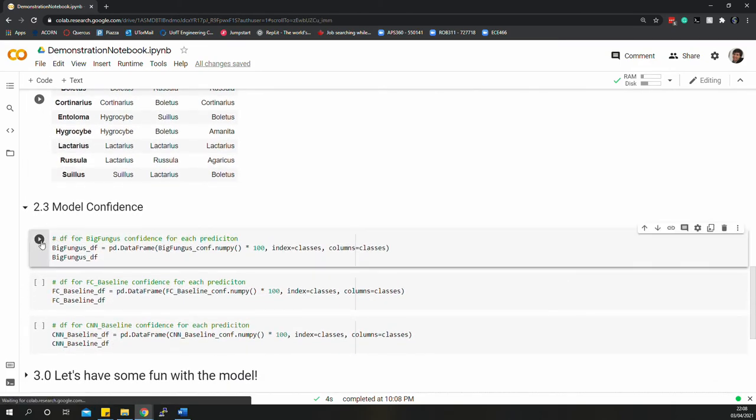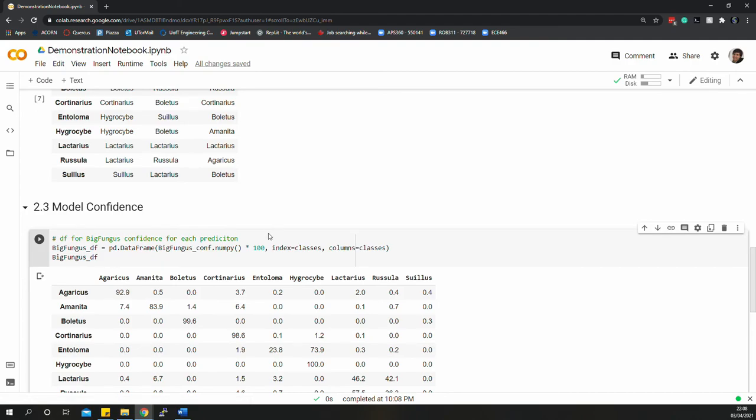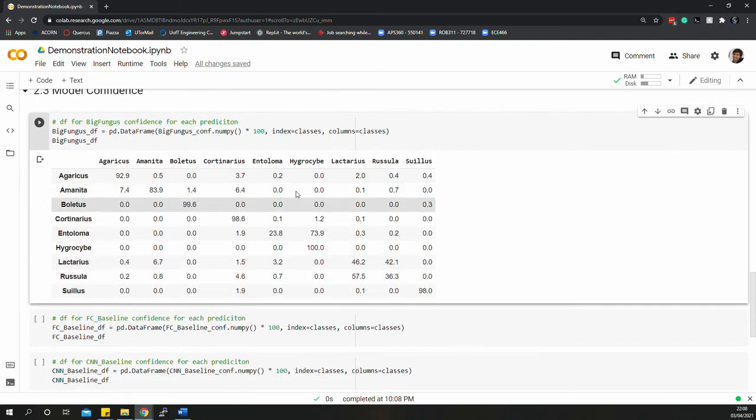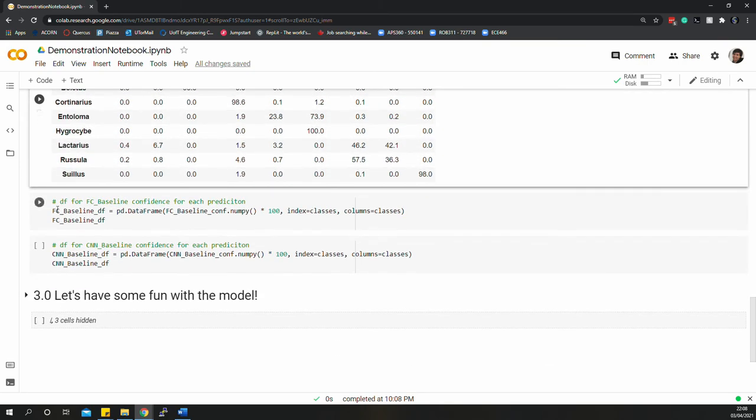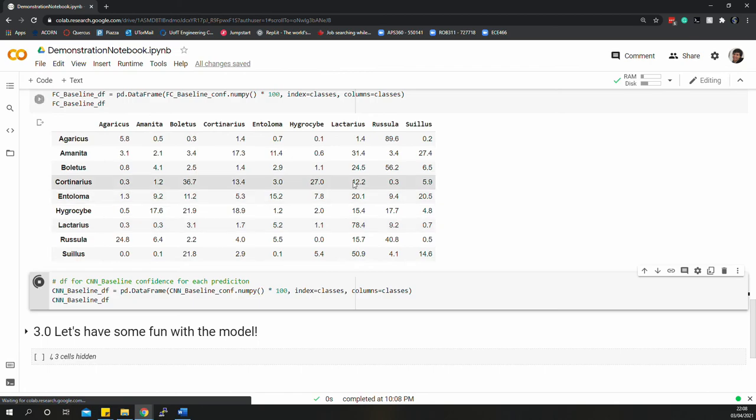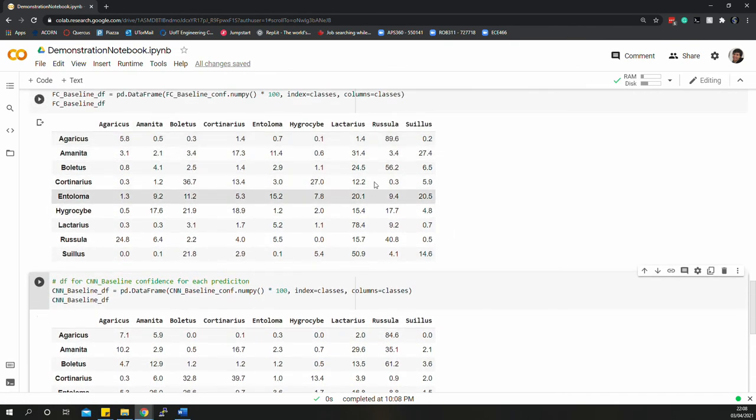For more insight, let's look at the confidence with which each model used to make its predictions. As you can see here, BigFungus has this nice diagonal geometry to its matrix. Meanwhile, our other two baseline models do not, as they purely make guesses.